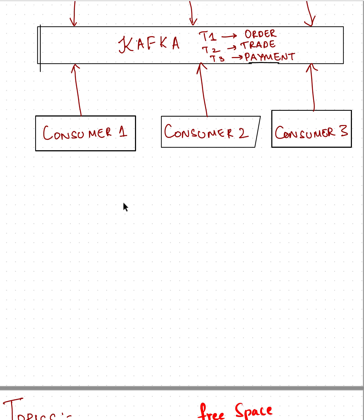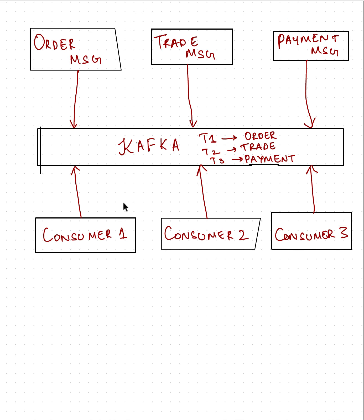Kafka solves this problem. Take an example where you can store all this information in a single system, and consumers who want this data can consume based on their requirement. For example, you have an order message, trade message, and payment message, and you're trying to store this data into Kafka. You create different topics - remember topics as tables. You store the order message in the order topic, the trade message in the trade topic, and the payment message in the payment topic. Topics are abstractions analogous to tables in a database.